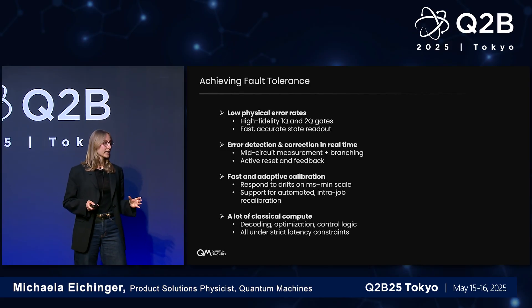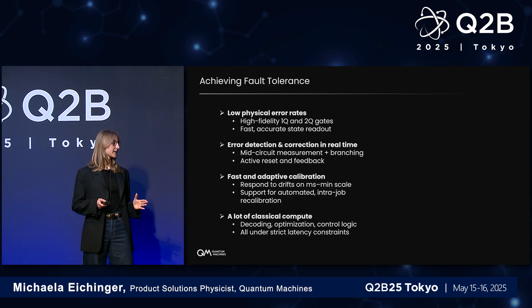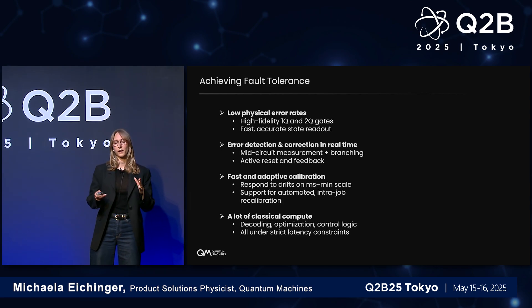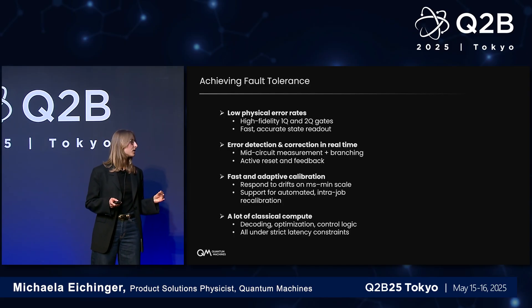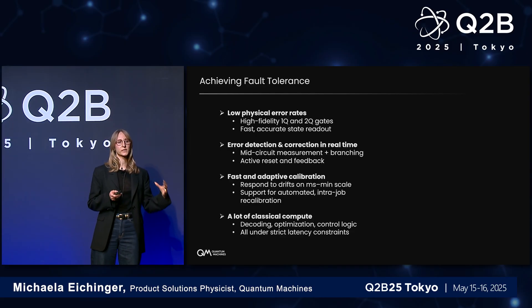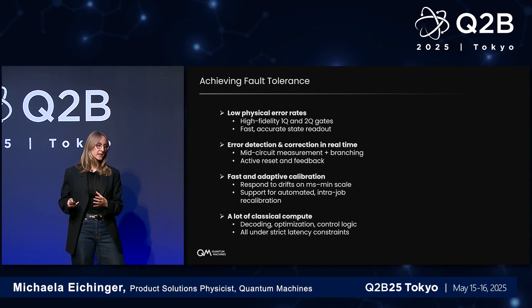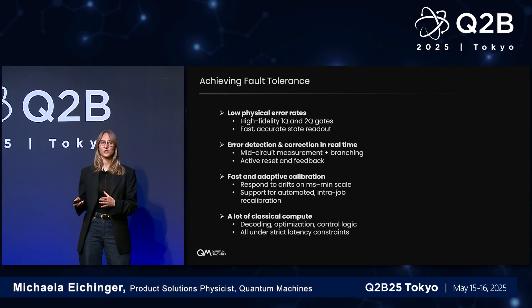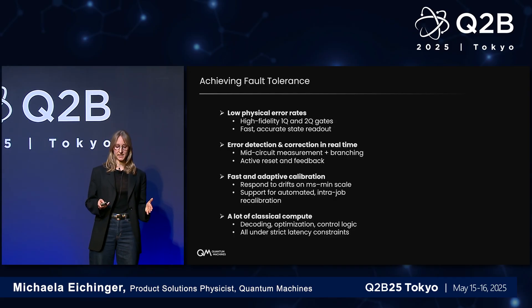All of these requirements actually lead to needing a lot of classical compute. Anything from optimization, calibration, and decoding puts a heavy load on these classical resources that are needed to perform the actual quantum operations. On top of that, it also needs to be extremely tightly integrated with the quantum part — and that is what I'm referring to here as strict latency constraints.